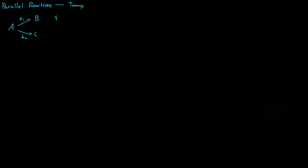The reaction rate of B is equal to K1 times the concentration of A to some power alpha 1. And the reaction rate of C is equal to K2 times the concentration of A to the power of alpha 2. Now if we remember that the kinetic constant is equal to A times E to the power of negative activation energy all divided by RT — that's the Arrhenius equation. We use it to find out how temperature affects K.